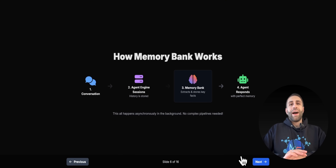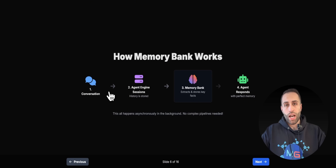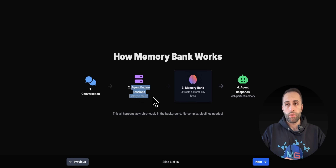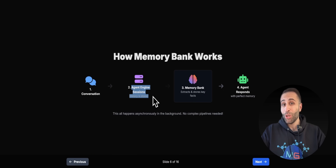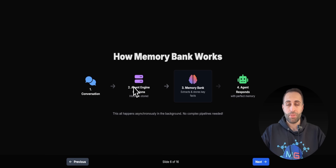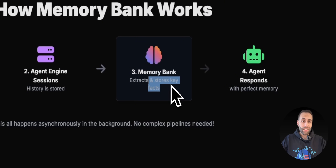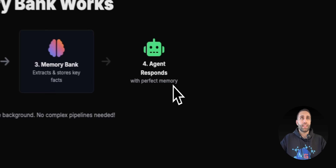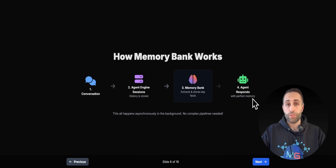Going through the details of how it works: when you have interactions with your AI agent, you need to create an agent engine session in GCP. This is a GCP product that lets you deploy your agents, and memory is added right where you deploy the agent. So not only can you deploy your agent there, but you can also attach long-term memory automatically. The Memory Bank then automatically extracts and stores key information through your interactions with your AI agent, and your agent responds in a personalized manner — even if you come back tomorrow and start a totally new session, the memory is still there.